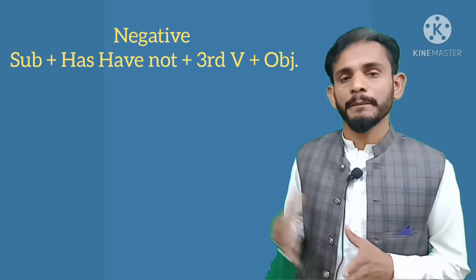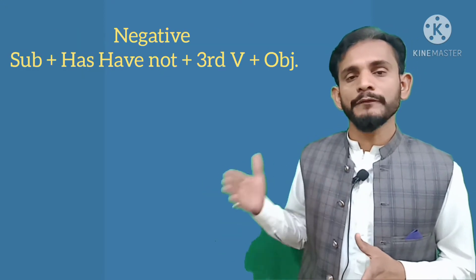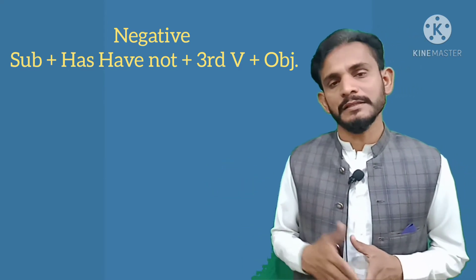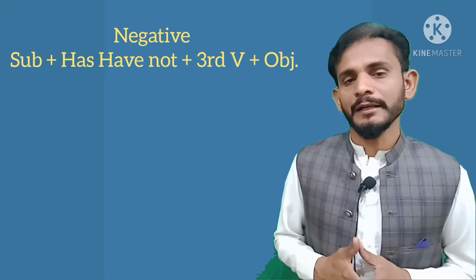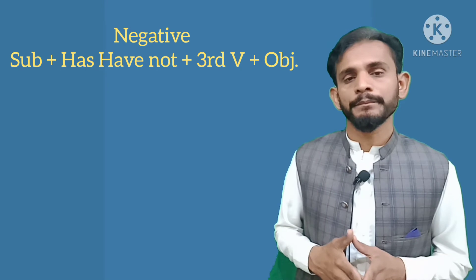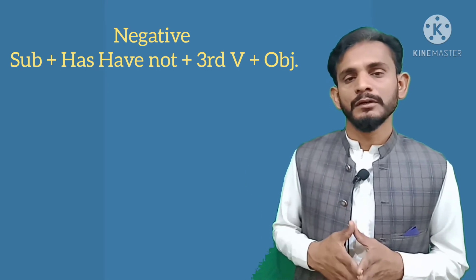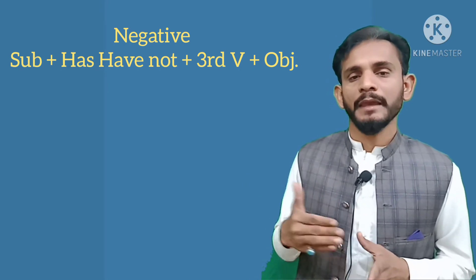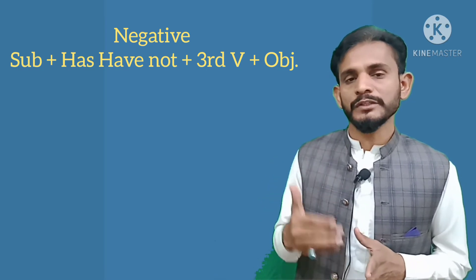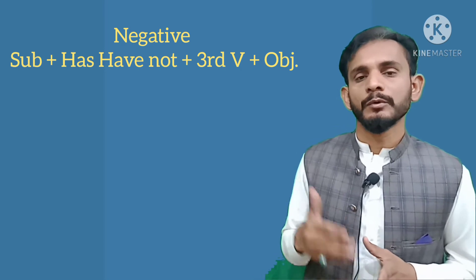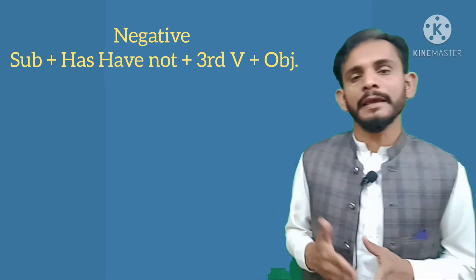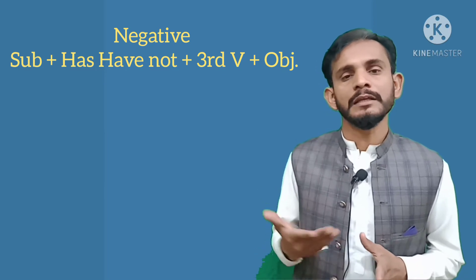Dear students، اب چلتے ہیں negative یعنی منفی sentences کی طرف۔ اس کا structure یہ ہے: Subject + has not / have not + third verb + object۔